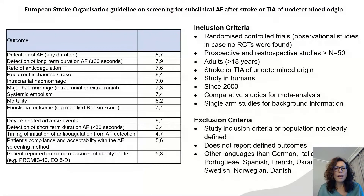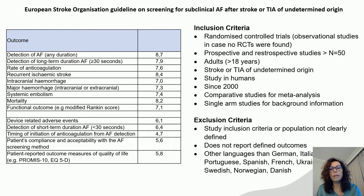Following the methodology, we defined a series of topics for our guidelines and a set of outcomes that were scored by all the model working group, as presented in this table. You may wonder why we chose outcomes that are not clinical. We were aware of the lack of clinical outcomes in the literature, so we considered that the detection of AF was a sufficiently relevant outcome for our topic.